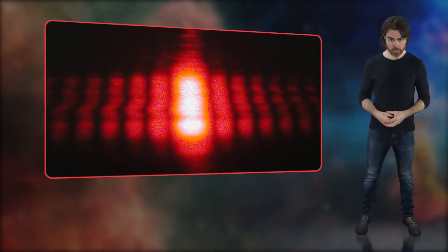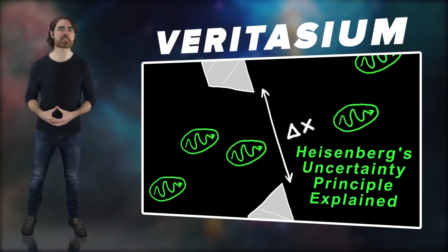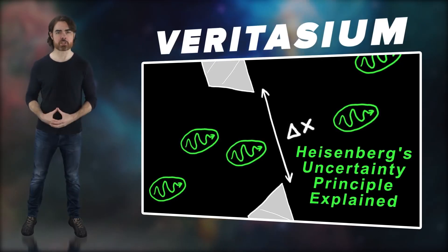This is all super abstract, but a concrete example is single slit diffraction. If we increase our certainty of the position of a particle by narrowing the slit, we also increase the uncertainty of its momentum as it passes the slit. This results in an increasing spread in final locations. Check out Veritasium's excellent video to see this in action.